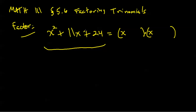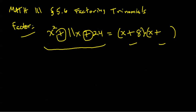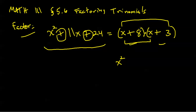This sign is positive, that means these signs in between have to be the same — either plus/plus or minus/minus to get a plus 24. This sign is also positive, so both signs in between have to be positive. If I use 8 and 3, I'll get the correct layout. You can always check your answer in any factoring problem by multiplying your answer to see if you get what you started with. My outer product is 3x, my inner product is 8x, and those do add up to 11x.